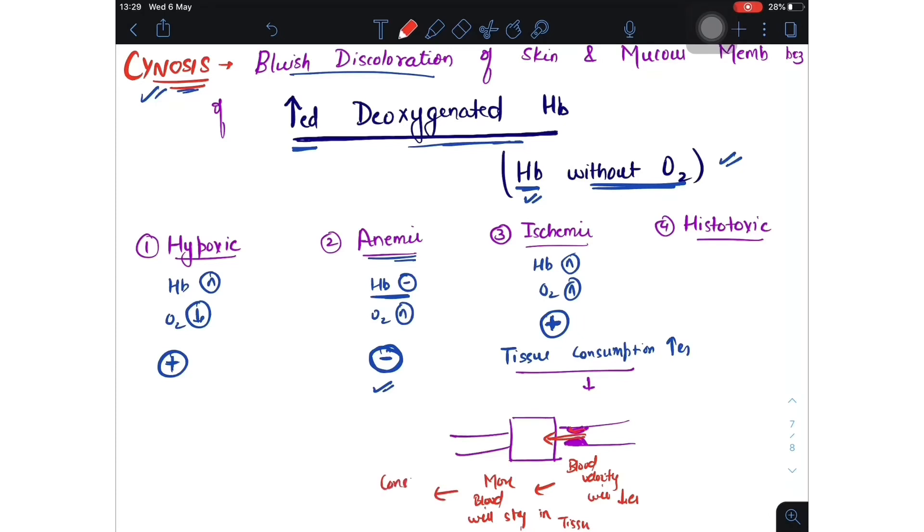So tissue will consume more, and that is tissue consumption increases. At the end, when the blood is going out, hemoglobin is still normal but O2 is less. This is the definition of cyanosis. That's why we see cyanosis here.